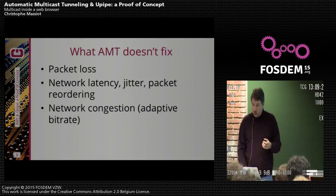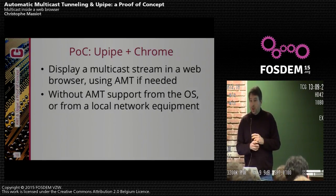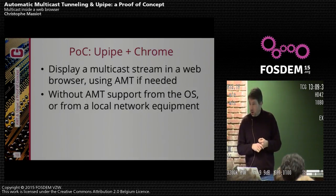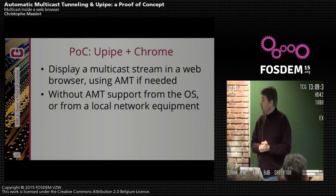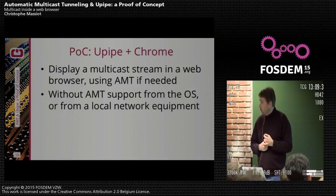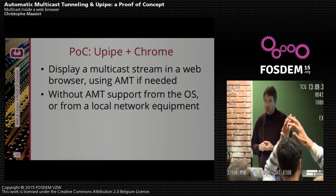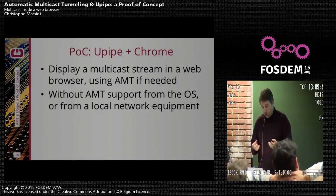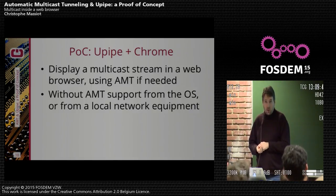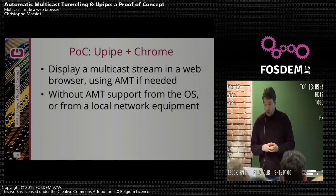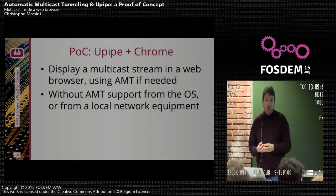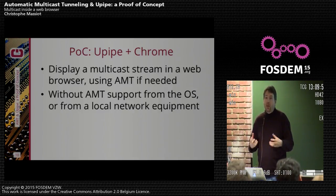Now I turn to the proof of concept we've tried to demonstrate the technology. It was done with the EBU, which provided the servers. Cisco provided a router, and OpenAMT — my company — provided a streamer and some code. The goal was to display a multicast stream in a web browser using AMT, switching to AMT if needed, without having AMT support in the OS or in the network.